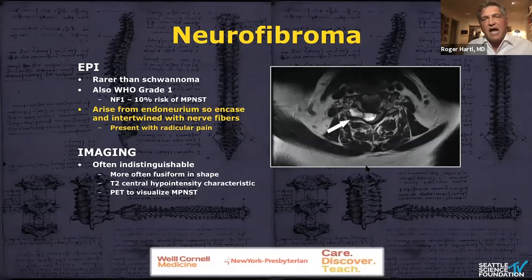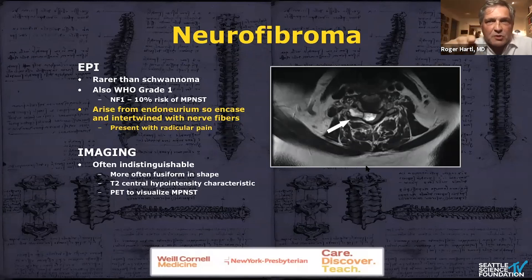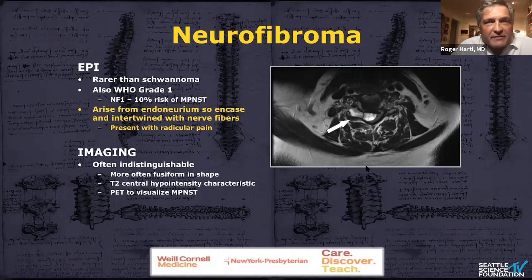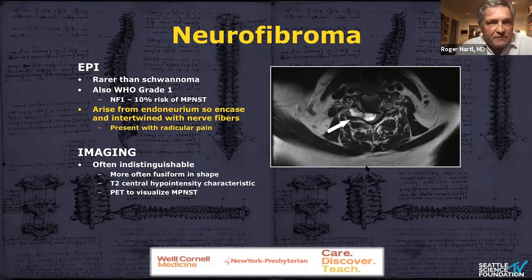Somewhat related is the neurofibroma, also related to the nerve roots. In contrast to the schwannoma, which displaces the nerve root, the neurofibroma really grows around the nerve root — the nerves actually go through the neurofibroma — and therefore it can be much harder to resect those lesions, and the neurological side effects of surgery can be more significant. Neurofibromas are associated with NF1 or NF2, von Recklinghausen disease, and there's about a 10% chance of developing malignant peripheral nerve sheath tumors, especially with NF1. That makes them distinctly separate from schwannomas.